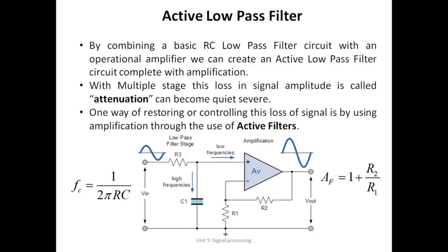The unwanted frequencies are filtered at the first stage and the low frequencies are fed into the amplifier, which increases the magnitude by the chosen factor. This is important because in multiple-stage electronic circuits or long-distance transmissions, small losses accumulate at every stage and the signal becomes too small to be useful. Using active low-pass filters ensures that loss at every step is compensated.